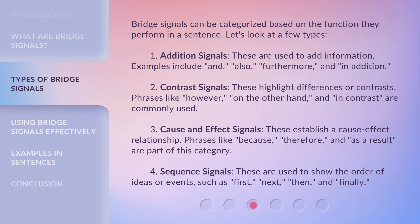Second, contrast signals. These highlight differences or contrasts. Phrases like however, on the other hand, and in contrast are commonly used. Third, cause and effect signals. These establish a cause-effect relationship. Phrases like because, therefore, and as a result are part of this category.